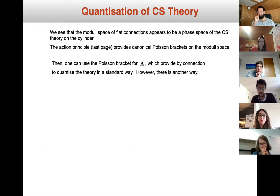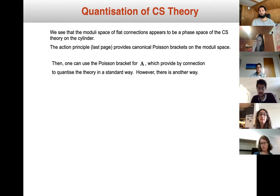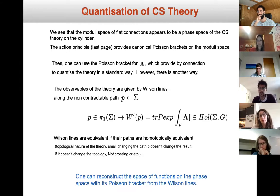Now we are interested in quantization. The moduli space of flat connections appears as the phase space of Chern-Simons theory on the cylinder, and the action provides the canonical Poisson bracket on the moduli space. When we have this Poisson bracket on the moduli space for A̅, we can use the standard procedure of replacing Poisson brackets with commutator relations and perform the quantization.